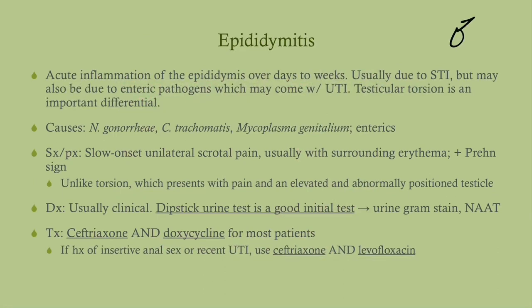Epididymitis occurs in men only, as they're the only ones with an epididymis. This is acute inflammation of the epididymis, a tubular structure just posterior to the testes. It's usually due to an STI, but can also be due to enteric pathogens with a UTI. Testicular torsion is an important differential. The causes include Neisseria gonorrhea, Chlamydia trachomatis, or Mycoplasma genitalium, and also enterics.